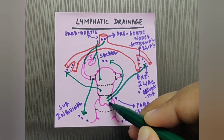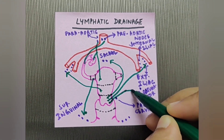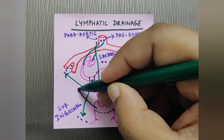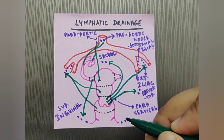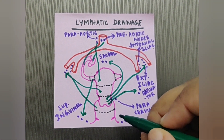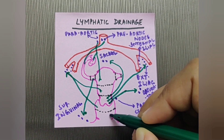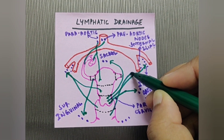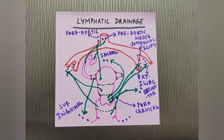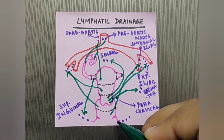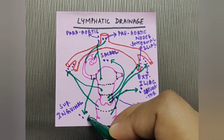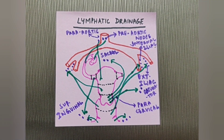From the cervix, drainage also goes to the external iliac lymph nodes, and through the para-cervical nodes it drains into the obturator lymph nodes. From the upper part of the vagina it drains into external iliac lymph nodes, from the lower part of the vagina into internal iliac lymph nodes, and the part below the hymen drains into the superficial inguinal lymph nodes.